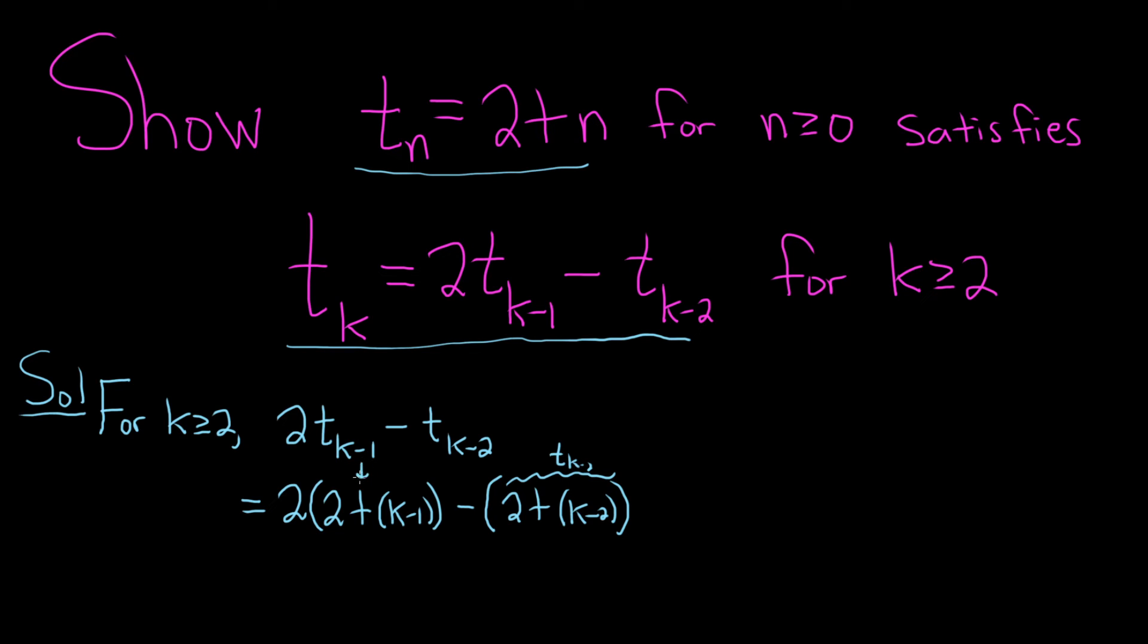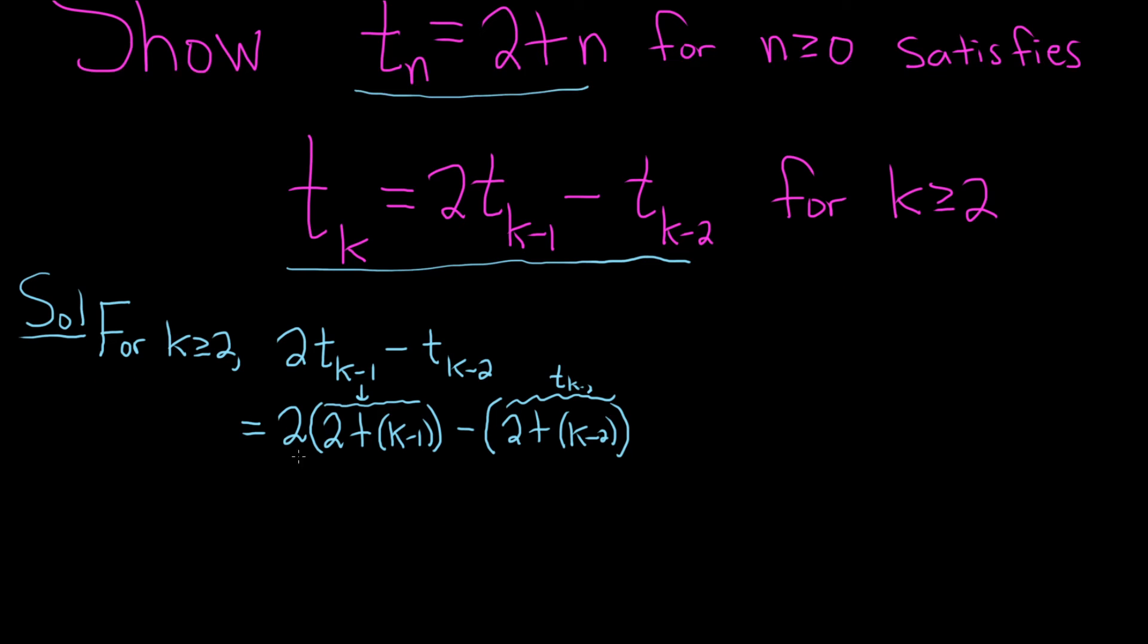And this piece here is your t sub k minus 1. So now let's keep going. This is 2. We can combine the 2 and the negative 1 here. This will be 1 plus k, because 2 minus 1 is 1, minus, and then here the 2's cancel, so we have k.